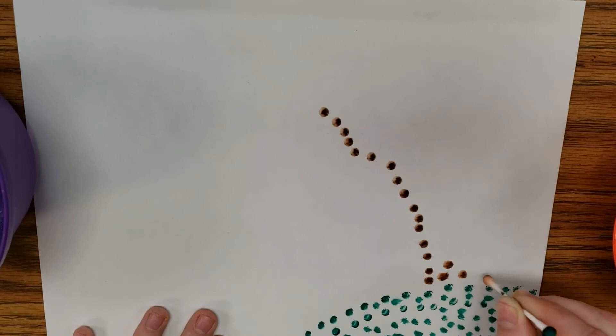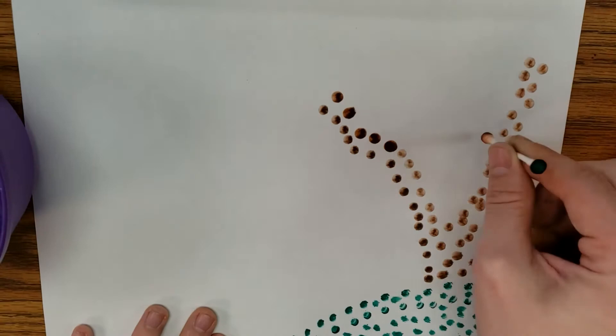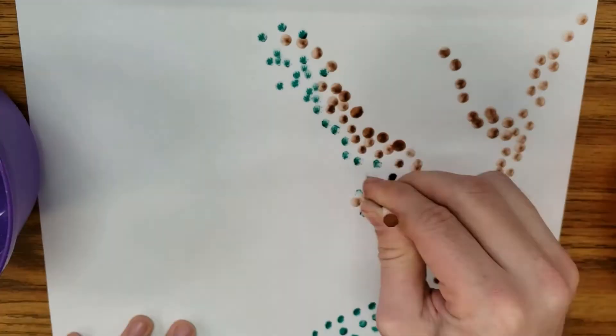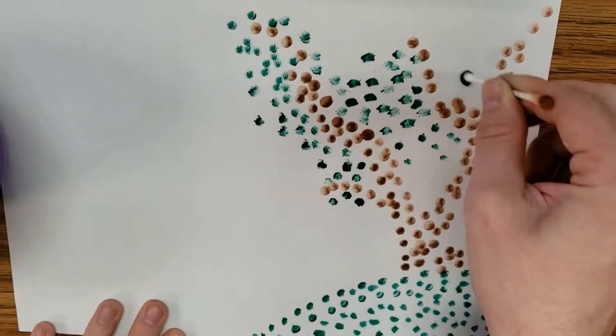After you have placed dots of one color over large areas, you can add another color over it to create optical color mixtures. In my painting, I placed a few small yellow dots in my tree and in the grass to change the way we see the colors from a distance.